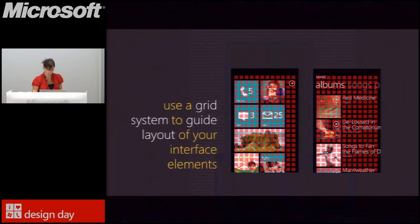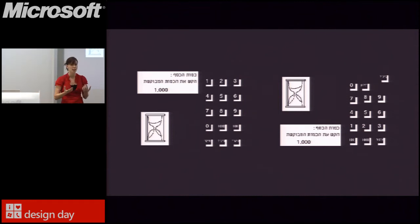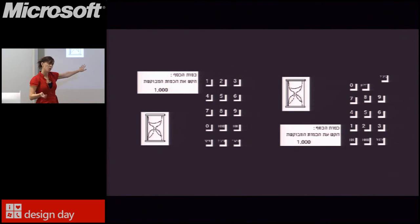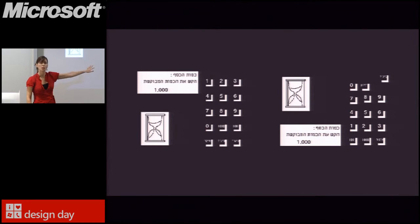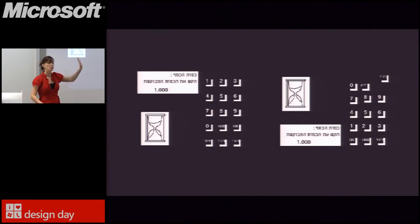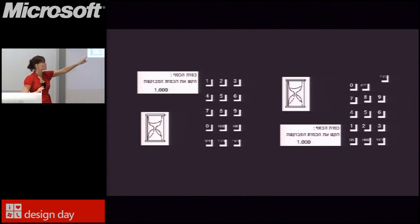Grids can not only improve the aesthetic quality of your experiences but also the usability. There's research by Noam Trutinsky at Ben-Gurion University using a very simple bank teller interface — a series of keys. The interface at left was nicely aligned to the grid; the interface at right had just two buttons slightly askew. Users tested far better with the left interface. Something as simple as a little misalignment can harm usability — very important to keep in mind.